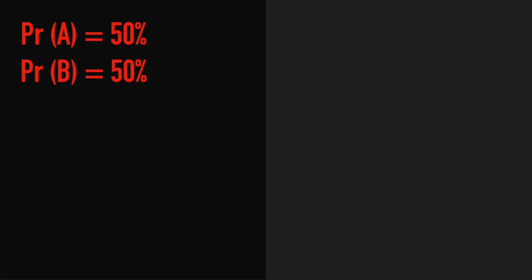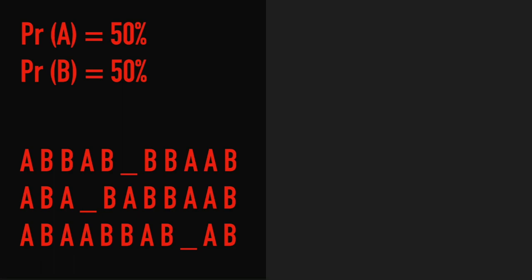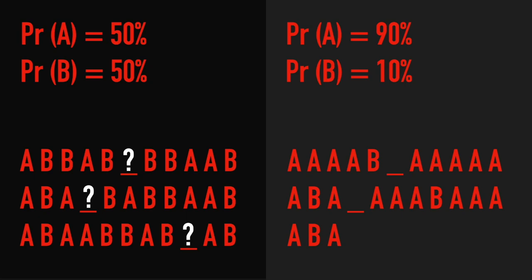Let's imagine we have a secret message that contains only the letters A and B. If we know in advance that the probability of occurrence of A or B is 50%, then every single letter in this message would contain a high level of information and will be needed to understand the message. On the contrary, if the probability of A was 90% and B 10%, then we would be more confident in guessing that a missing letter is A. This message carries a lower level of information because the occurrence of each letter hardly adds any value to our knowledge. Statistically speaking, we say that the second message has a lower entropy.